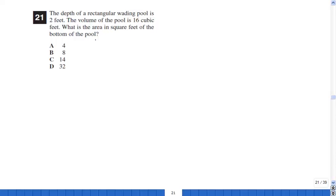All right, well, what can we do here? Rectangular wading pool is 2 feet, the depth. The volume of the pool is 16 cubic feet. What is the area?